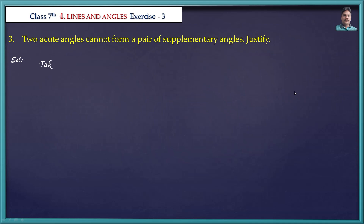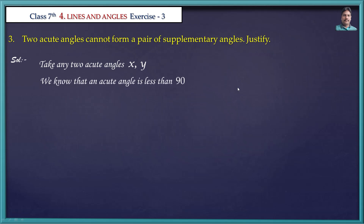Let us take any two acute angles, x and y. We know that an acute angle is less than 90 degrees. So x is less than 90 degrees and y is also less than 90 degrees.